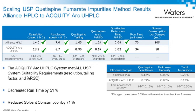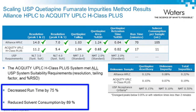Since this is the impurity method, we also looked at the determined percent impurity for the two impurities found. The HPLC conditions and the scaled UHPLC conditions produced the same quantitative percent for the quetiapine desethoxy and unknown impurity peaks. Overall, scaling the HPLC monograph method to a UHPLC method was successful, reducing run time by 51% and decreasing solvent consumption by 71%.